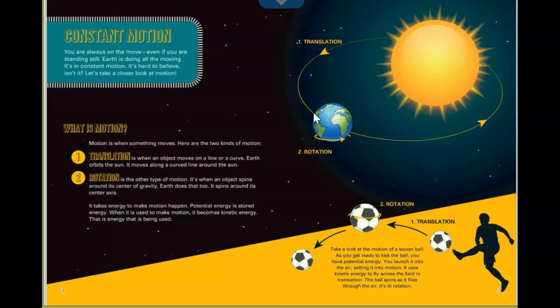It takes energy to make motion happen. Potential energy is stored energy. When it is used to make motion, it becomes kinetic energy. That is the energy that's being used. So let's take a look at motion of a soccer ball. As you get ready to kick, you have potential energy. You launch it into the air, setting it into motion. And it uses kinetic energy to fly in the field of translation. And as it does it, the ball spins as it flies through the air. And that's rotation.